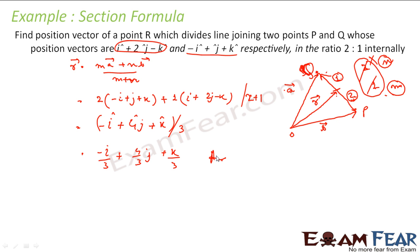And that is the answer — not that difficult. The only trick here is: if it is 2:1, you should take 2 on this side and 1 on the other side because you are going from P to Q. Then just name A and B, and apply 2 into A's position vector plus 1 into B's position vector.